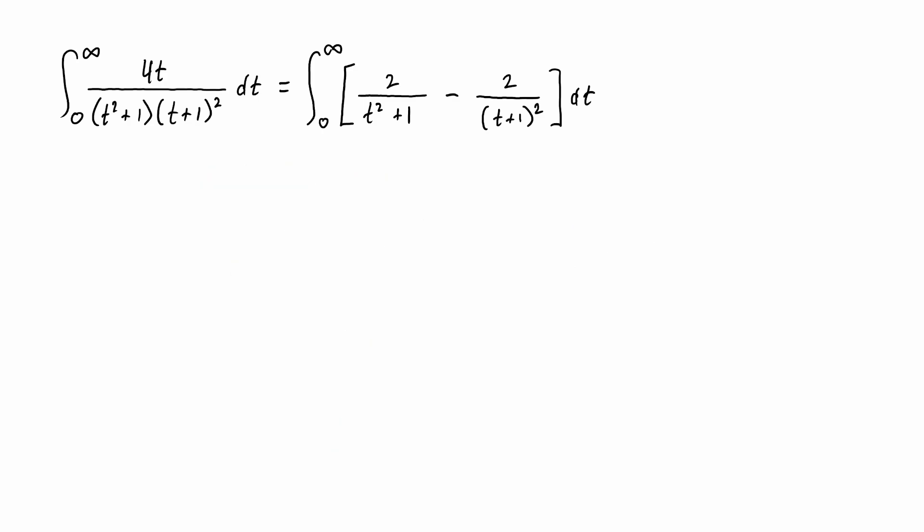At this point, the two antiderivatives should be really straightforward. The first one is going to become 2 times inverse tangent of t. And just be careful with your signs for that second integral. This will come out to be positive 2 divided by t plus 1. And we're going to evaluate that from t equals 0. And because the upper limit is infinity, we're not going to be plugging in t equals infinity. But rather, we'll take a limit as t approaches infinity for that evaluation.